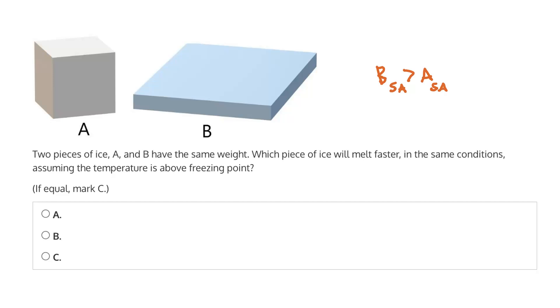And because it has a larger surface area, heat can transfer far more efficiently in B than A. Therefore, in the same conditions and assuming the temperature is above freezing, B will melt more quickly.